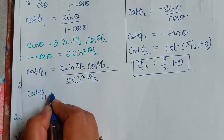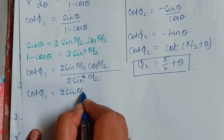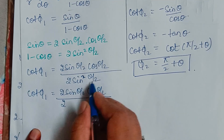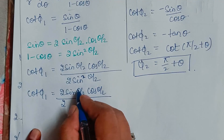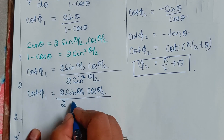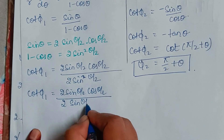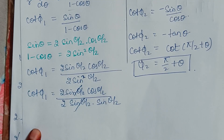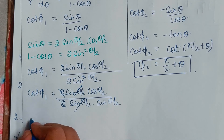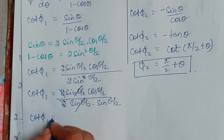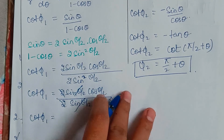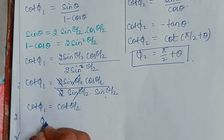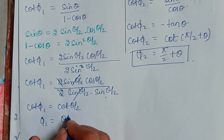Now for cot φ₁: 2 sin(θ/2) cos(θ/2) divided by 2 sin²(θ/2). I will expand this so that sin(θ/2) and sin(θ/2) cancel, and 2 and 2 cancel. We are left with cos(θ/2) over sin(θ/2), which is cot(θ/2). So φ₁ equals θ/2.